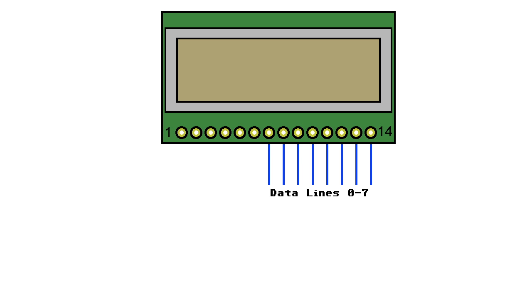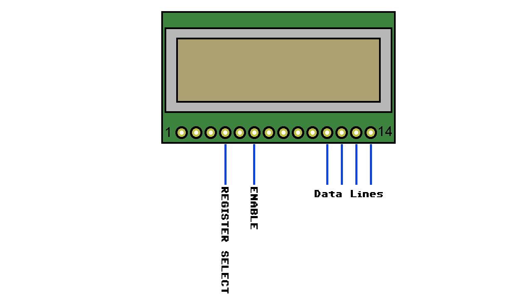The thing is, 8 lines are not enough to drive an LCD like this, because we would need 2 more lines for the enable pin and the register select. However, we can easily solve that problem by operating the screen in 4-bit mode instead of 8-bit mode.